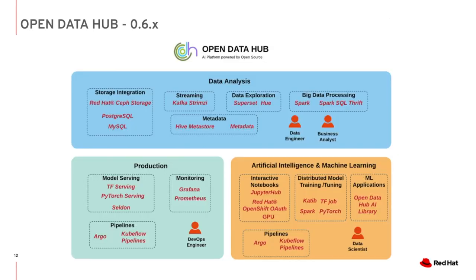Open Data Hub 0.6.x will include components from both the previous Open Data Hub operator and Kubeflow. For the data analyst user, Open Data Hub will include integration with data lakes such as an S3 interface to Red Hat Ceph Storage, SQL databases such as PostgreSQL and MySQL, and data streaming using Kafka Strimzi. For data exploration, Open Data Hub will include Superset and Hue. For data processing, Open Data Hub will provide Spark and Spark SQL Thrift Server. Metadata tools such as Hive Metastore and Kubeflow Metadata will be included.